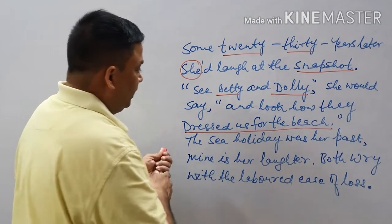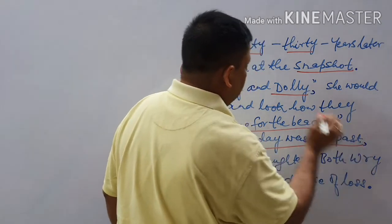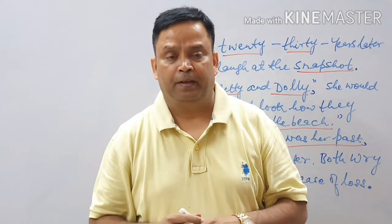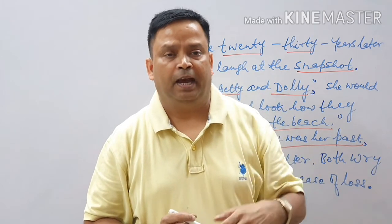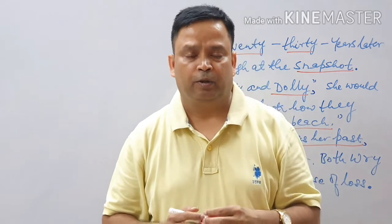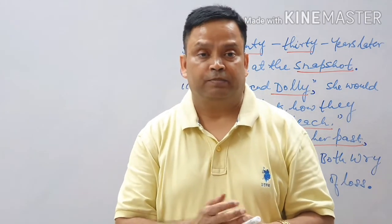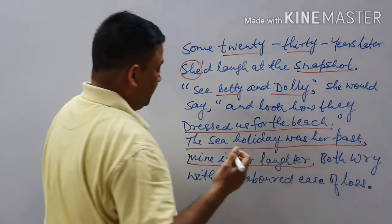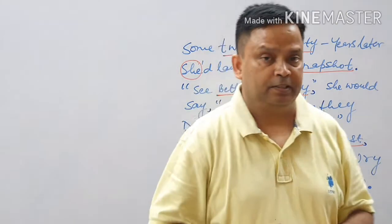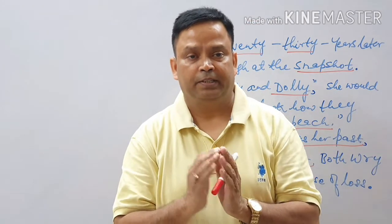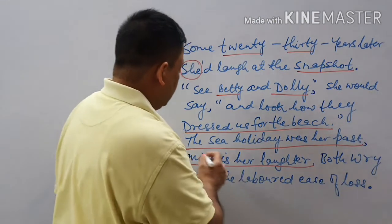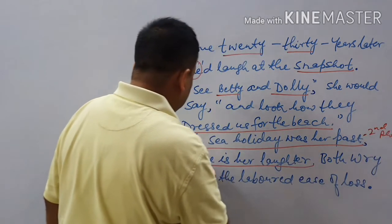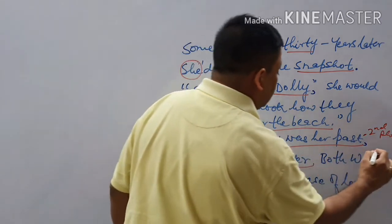The sea holiday was the past of the poet's mother, and she was remembering it. Although she was laughing, it is clear that she was missing that sea holiday. The poet then says, 'Mine is her laughter' — the laughter of the mother is now the past of the poet, because her mother is no more. The line 'the sea holiday was her past' relates to the second phase, while 'mine is her laughter' refers to the third phase.